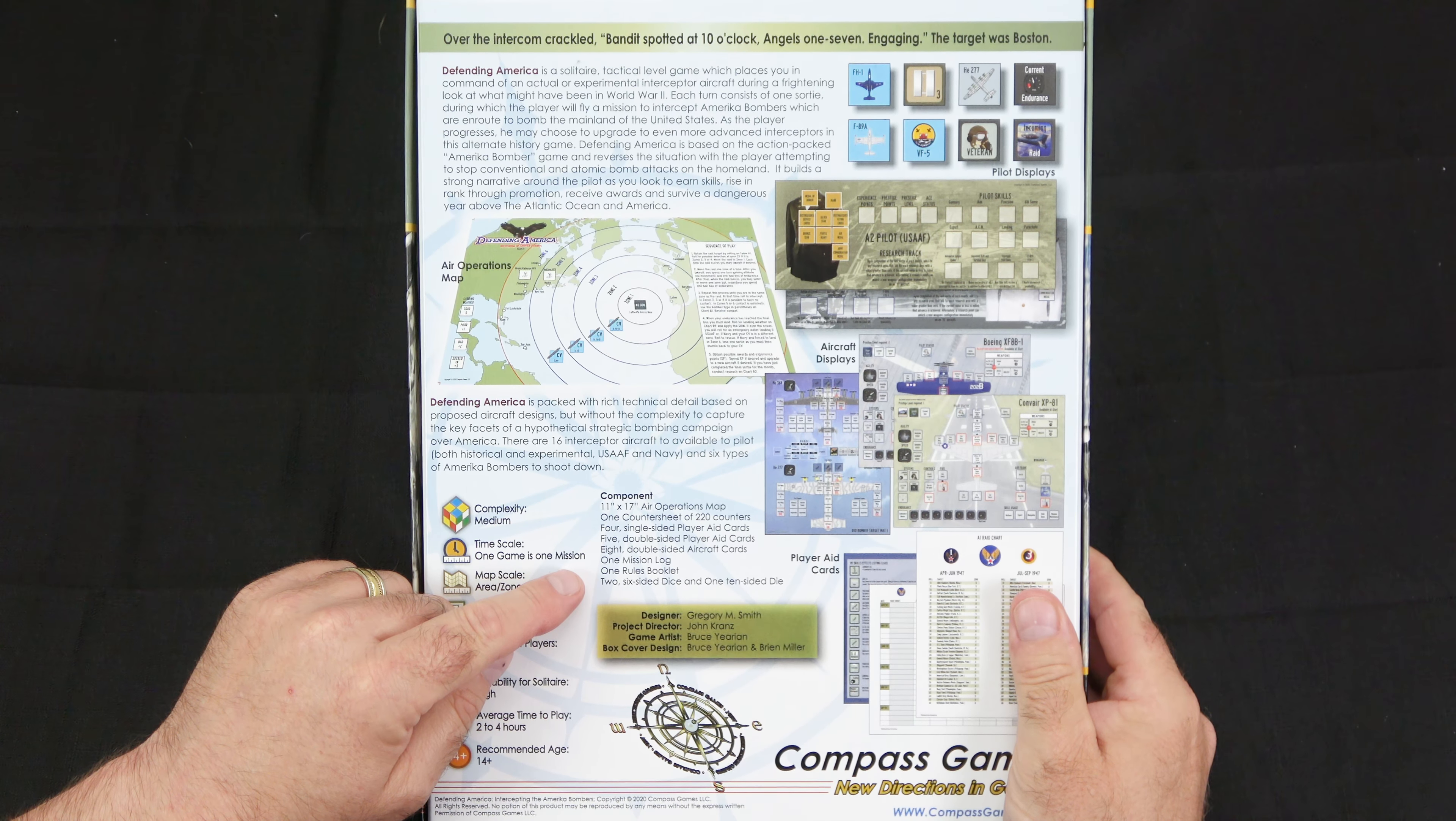Then we start the sequence of play on page nine. Remember, this is a 23-page rulebook, so you start with your sequence of play about midway through the game. The rest of it is all supporting text prior to that, and then we get into the procedures for all the different aspects, like combat here,